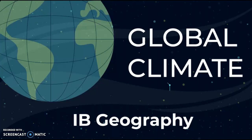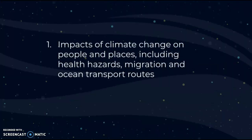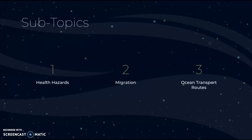This video is about the global climate from IMP Geography. The first point covers impacts of climate change on people and places, including health hazards, migration, and ocean transport routes. These are three subtopics that will each be covered in turn.